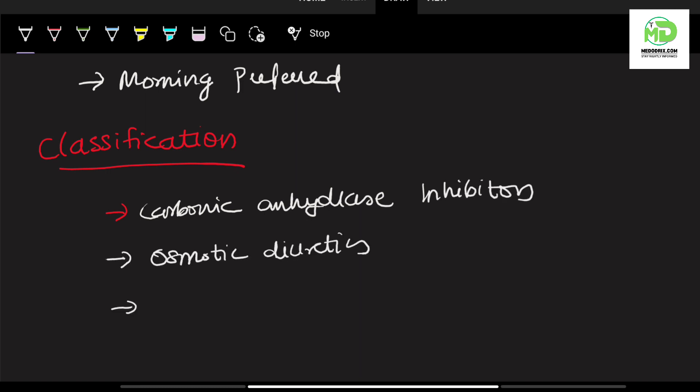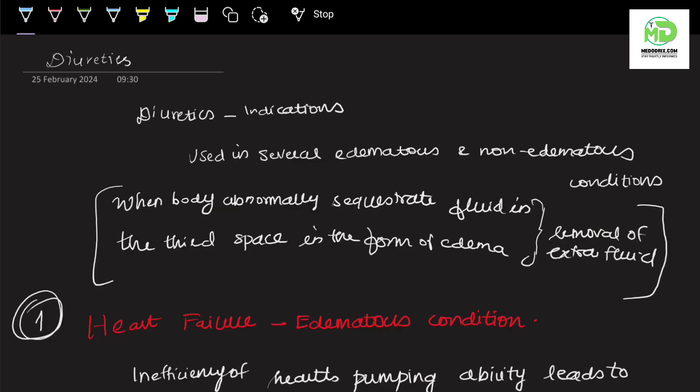We have several classes of diuretics. The most important classes include carbonic anhydrase inhibitors, osmotic diuretics, thiazide diuretics, loop diuretics, and potassium-sparing diuretics.